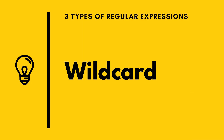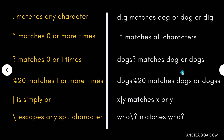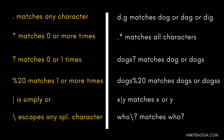So there are three major types of regular expressions. The first type is called a wildcard. There are six major types of wildcard regular expressions used most commonly. The first one is dot. What dot does is match any character. So D dot G would ideally match dog, dag, dig, or any letter between D and G. The dot can be replaced by any character basically.